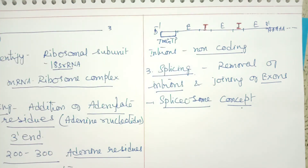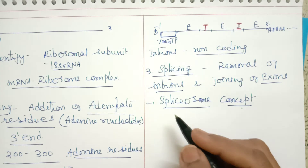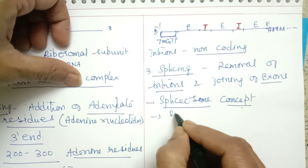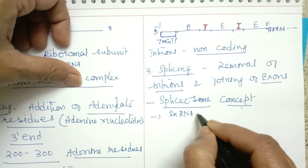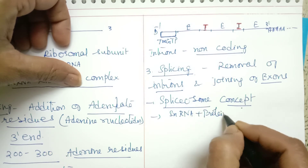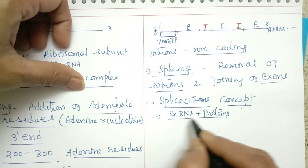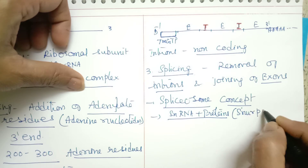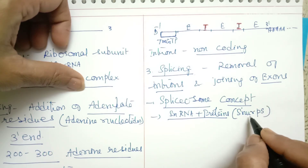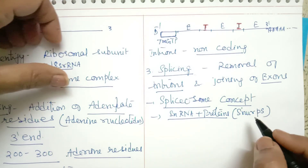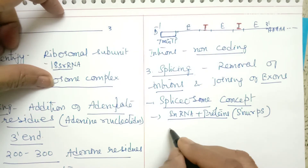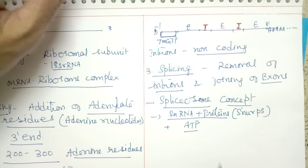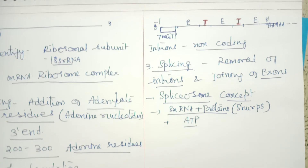The formation of spliceosome requires snRNA plus proteins combined together. This complex of snRNA and proteins is called SNRPs. Along with SNRPs, ATP is also required for the splicing process.